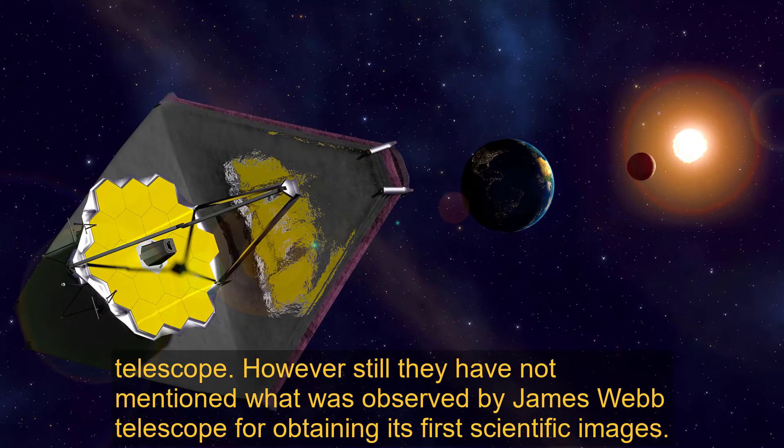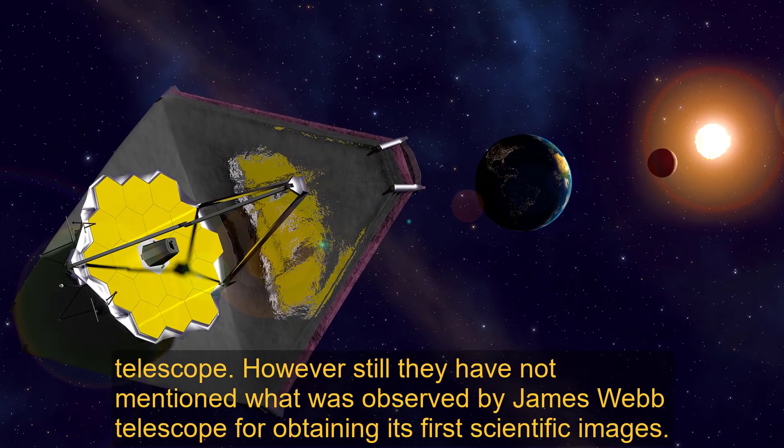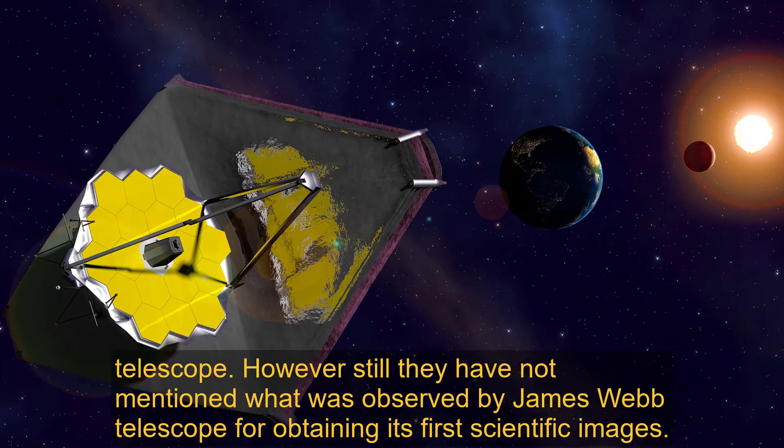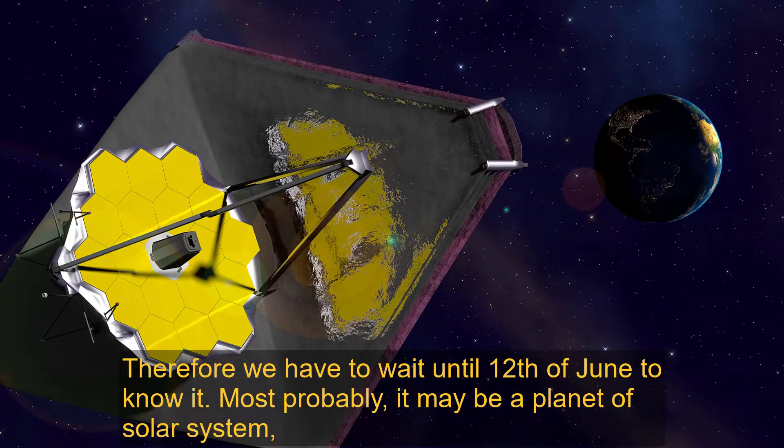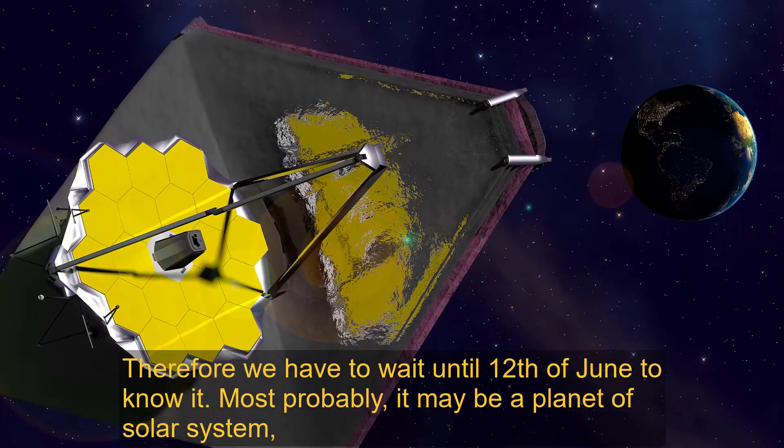However, they have not mentioned what was observed by James Webb Telescope for obtaining its first scientific images. NASA is keeping it as a secret. Therefore we have to wait until June 12th to know it.